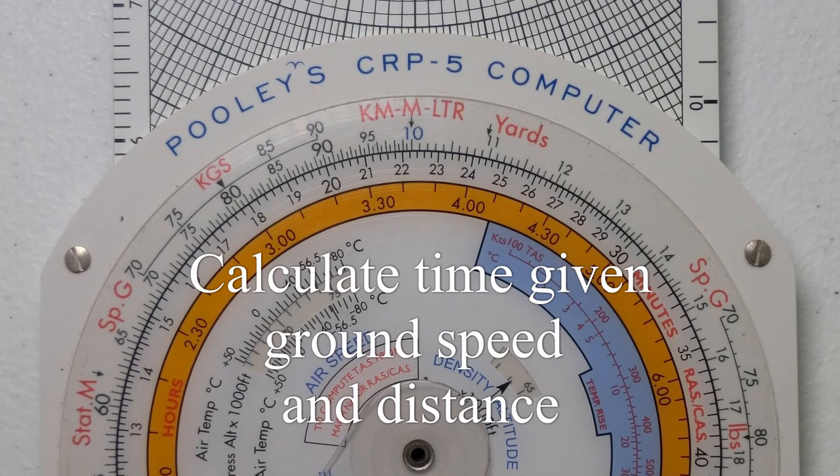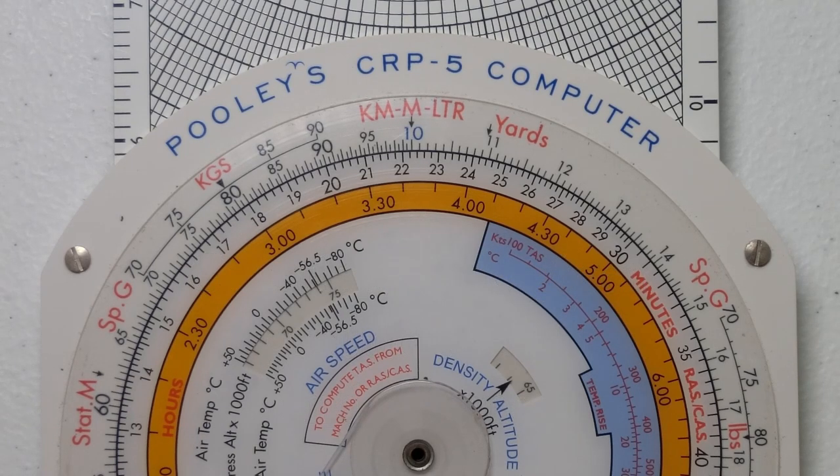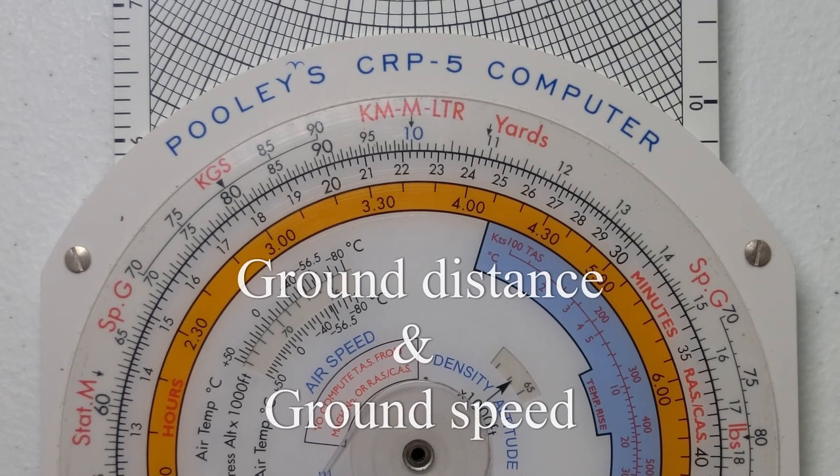In this video I'm going to show you how to use the Pooley's CRP-5 flight computer to calculate time. We remember that using the very simple formula: time equals distance over speed, so we need two variables here, the distance and the speed.